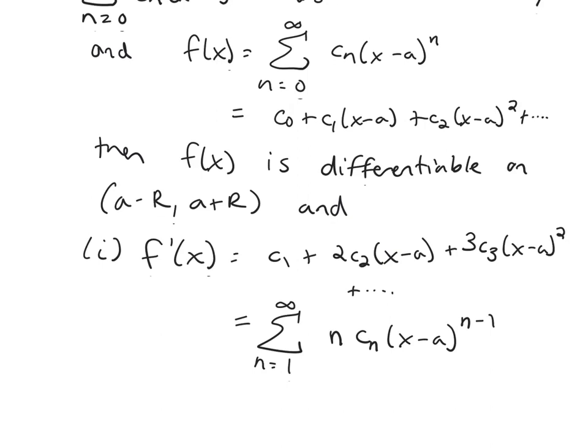So you might wonder why does this start off at 1 where previously my sum started off at 0. That's because when you take the derivative of a constant, you get 0. So you're losing a term. And so my sum can start at 1 instead of 0.